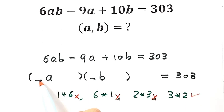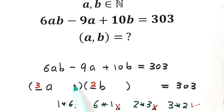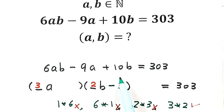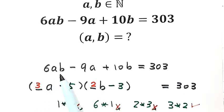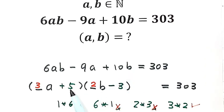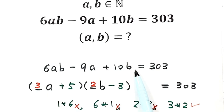So we put 3 before a and 2 before b. Next we need to find the constant terms. To get negative 9a, we need minus 3 in the first factor. To get positive 10b, we need plus 5 in the second factor. Let's check: 3a times 2b gives 6ab, 3a times negative 3 gives negative 9a, 5 times 2b gives 10b. But 5 times negative 3 gives negative 15, which wasn't in the original equation, so we add plus 15 to balance.